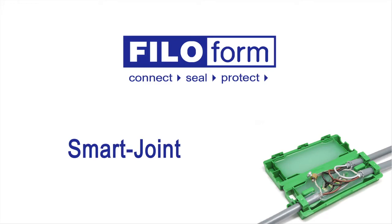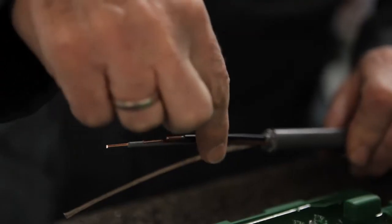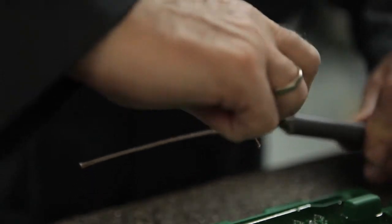The Smart Joint creates a totally waterproof cable connection quickly and easily. The easy-to-use manual ensures proper installation of the cable connection in a few simple steps.